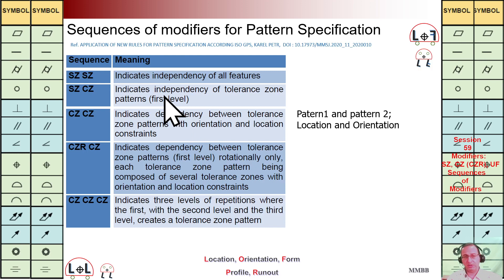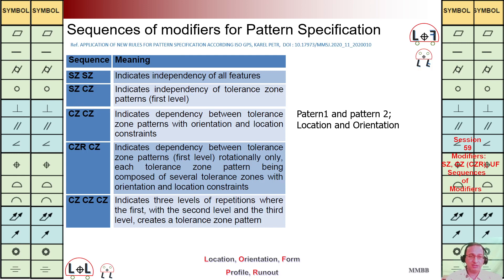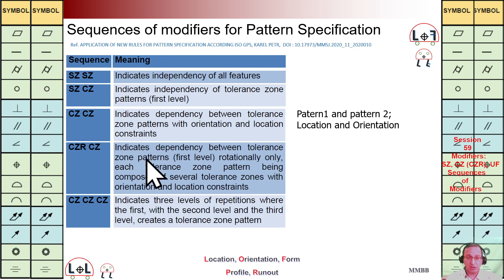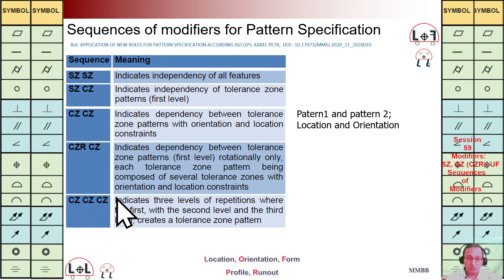The last topic is the sequence of modifiers. SZ SZ means: the first SZ refers to the pattern — there is no pattern between features — and the second SZ addresses orientation and location. SZ CZ means no pattern constraint, but combined zone for orientation and location. CZ CZ means the pattern is constrained rotationally only, and orientation and location are also constrained via the second CZ. CZ CZ CZ means combined zone for pattern one, combined zone for pattern two, and the final CZ addresses orientation and location.